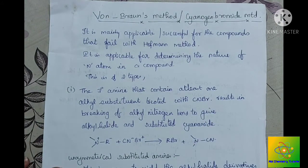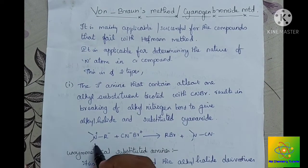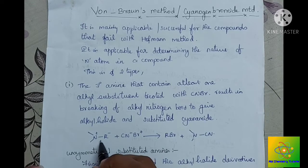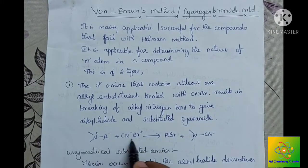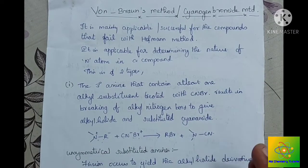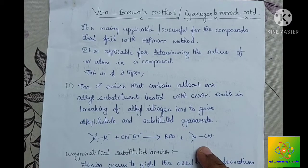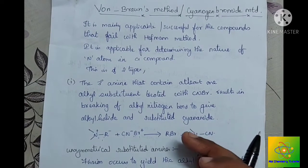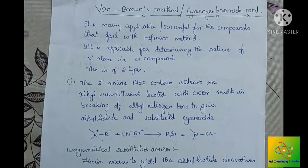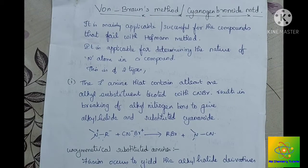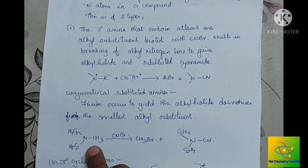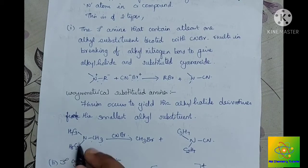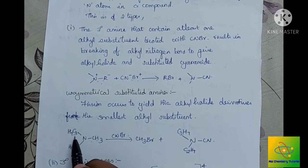When we treat tertiary amines with CNBr (Cyanogen Bromide), we get a reaction. This is the basic reaction for the Von Braun method for acyclic amines. In the case of an unsymmetrical tertiary amine with three different alkyl groups, the smallest alkyl substituent is the one to which the Cyanogen Bromide attaches. For example, with methyl, ethyl, and propyl groups, the bromine and cyanogen attach to the nitrogen atom at the smallest alkyl group.